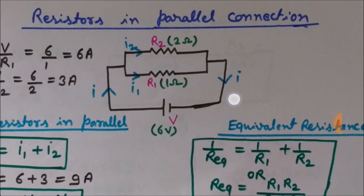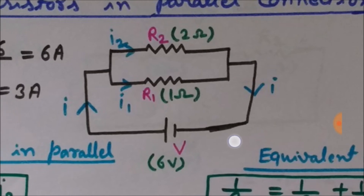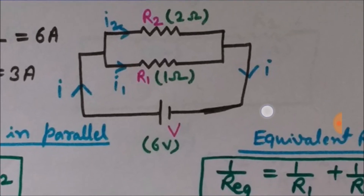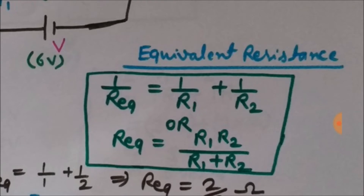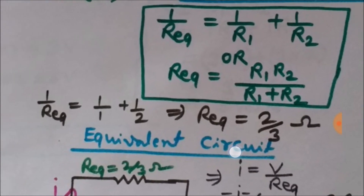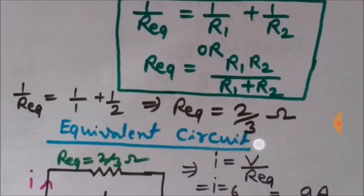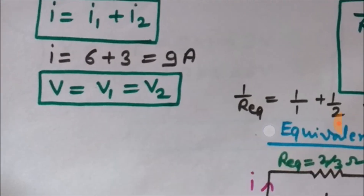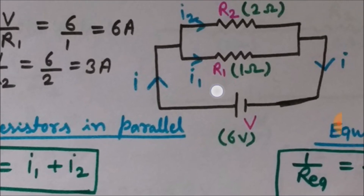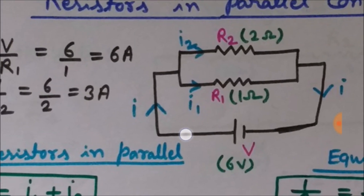Now we will see some theoretical concepts. In this image, R1 and R2 are two-ohm and one-ohm resistors respectively, with a six-volt battery. These two resistors are connected in parallel. To find the equivalent resistance using the formula 1/R_eq = 1/R1 + 1/R2, R_eq comes out to be 2/3 ohm. The net current is i1 + i2, where i1 and i2 flow through R1 and R2 respectively.